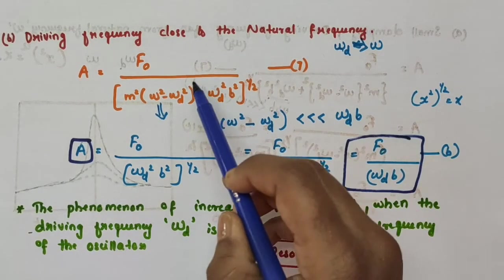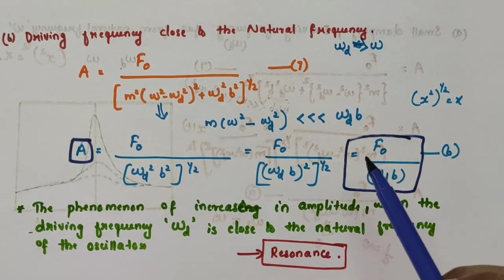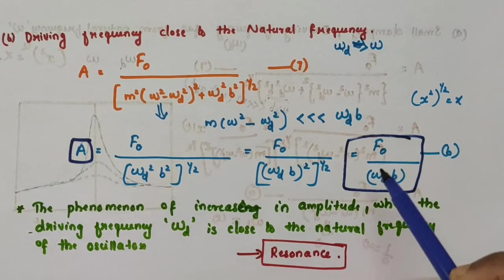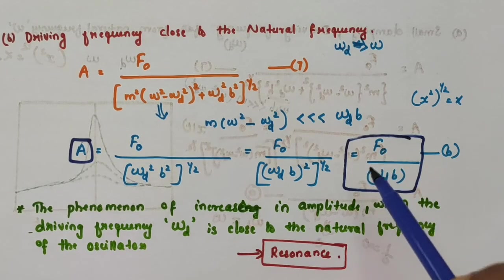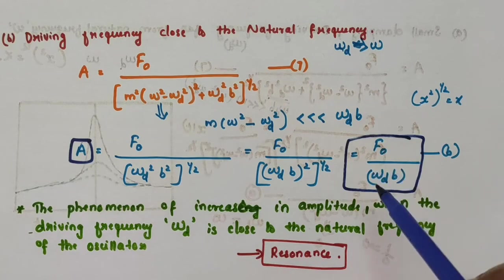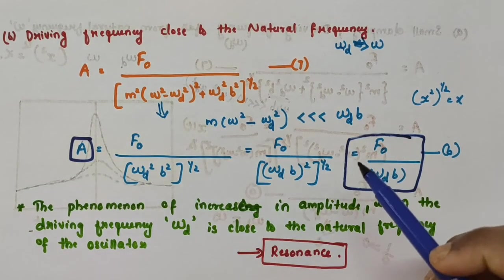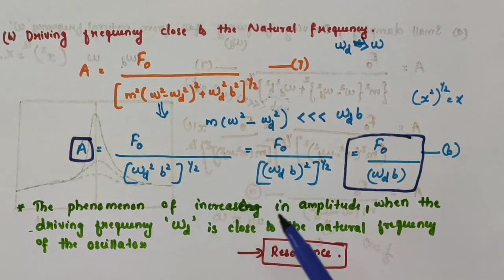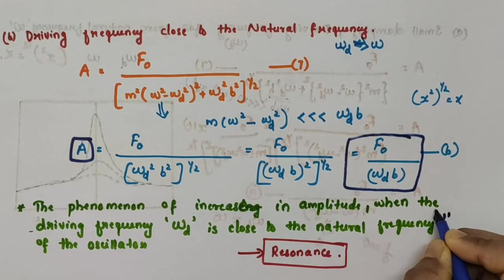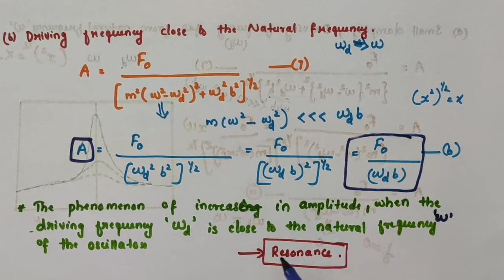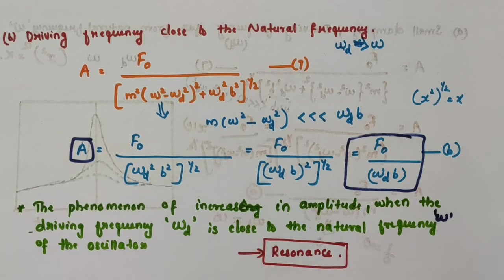Comparing equations 7 and expression (b), when the driving frequency is close to the natural frequency, the denominator is smaller so the amplitude is greater. This phenomenon of increase in amplitude when driving frequency omega_d is close to the natural frequency omega is called resonance. Your experience with swings is a good example: the skill in swinging to greater heights lies in synchronizing the rhythm of pushing against the ground with the natural frequency of the swing.